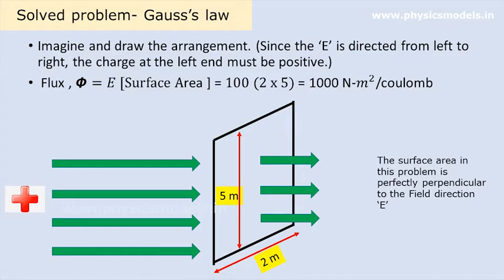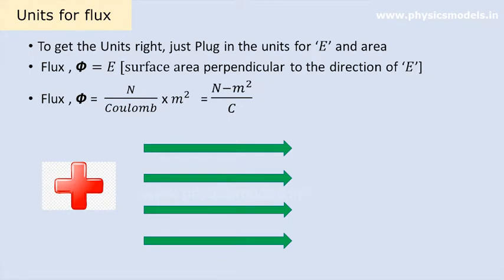We now take a look at the units. It's quite simple to write down the units for flux. So write fluxes E into surface area. So electric field is newton per coulomb and surface area units are meter squared. So multiplying both, you'll get newton per coulomb into meter squared. That's all there is to getting the units for flux since it's easy to derive it on the spot.